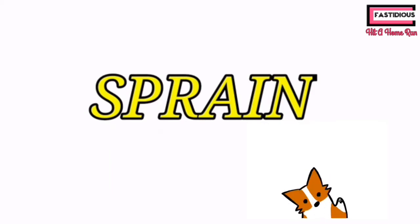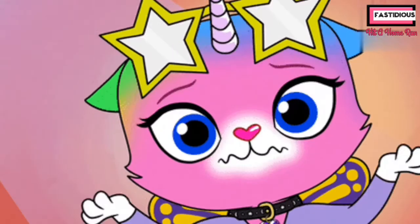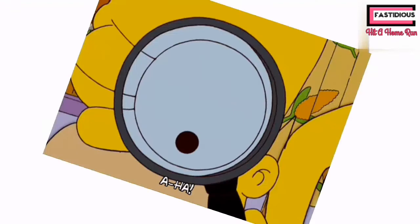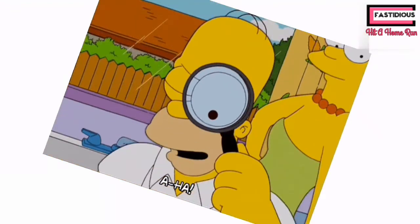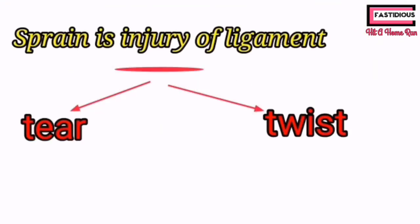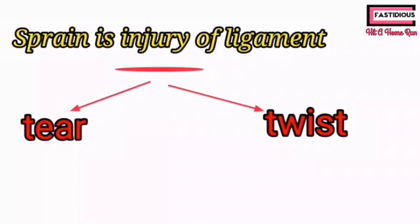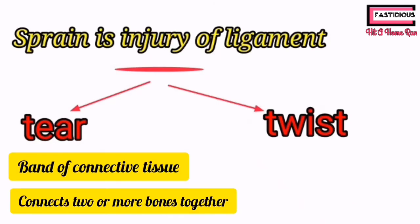Welcome to Fastidious Tupamine. Today's video topic is sprain. Sprain is basically the injury of a ligament in which the ligament tears or twists due to overextension. A ligament is the band of connective tissue which connects two or more bones together, forming a joint.